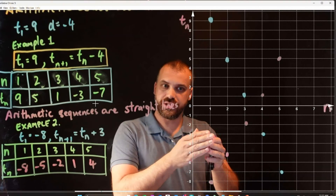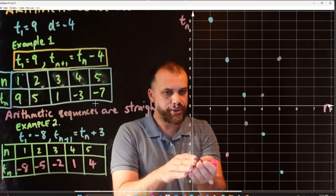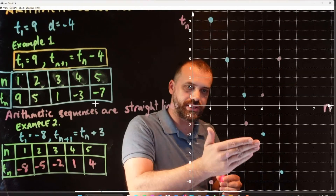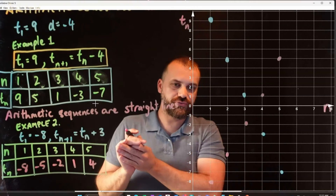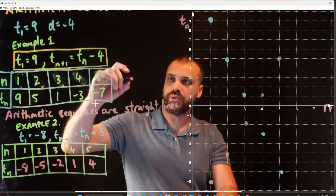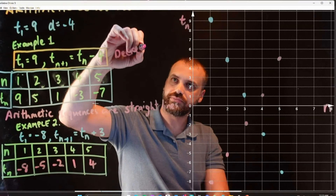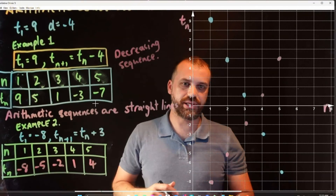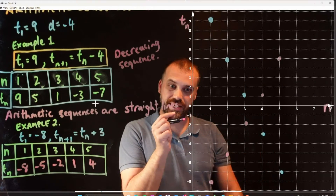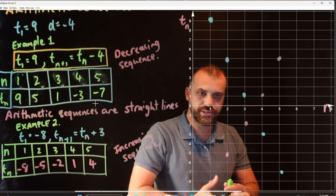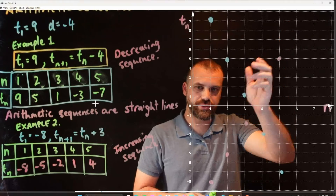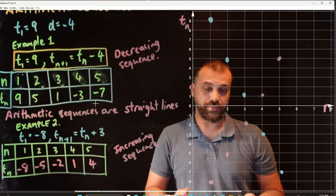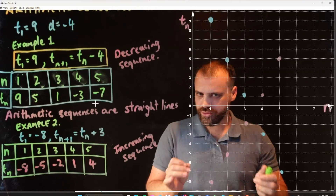The thing I want you to notice is that the blue dots and the pink dots behave differently. The pink dots are going up over time — it's an increasing sequence. The blue dots are going down over time — that's a decreasing sequence. This first sequence is a decreasing sequence because the numbers are going down; the second is an increasing sequence because it's going up.